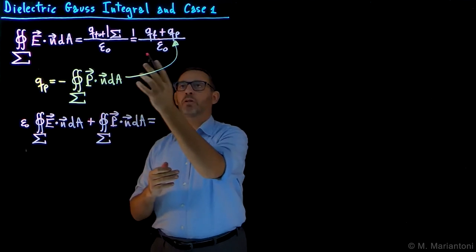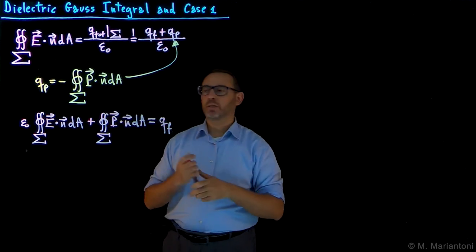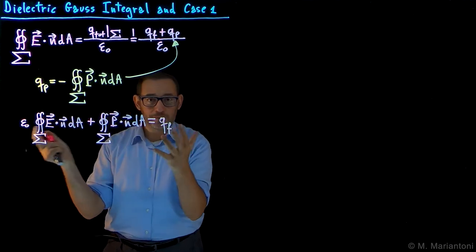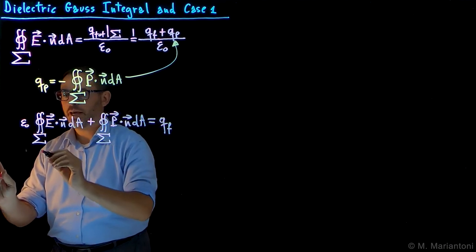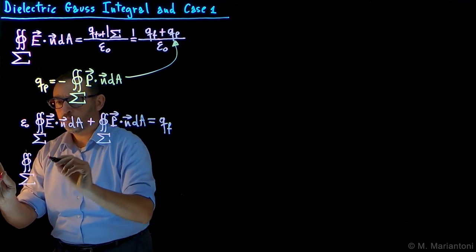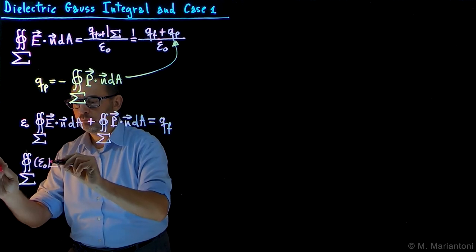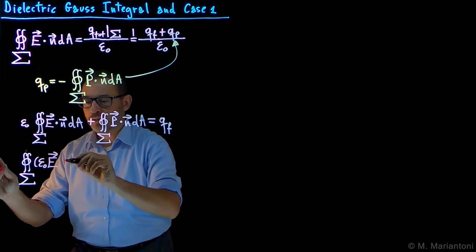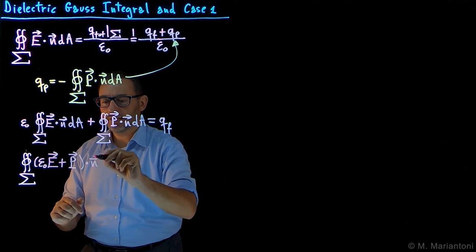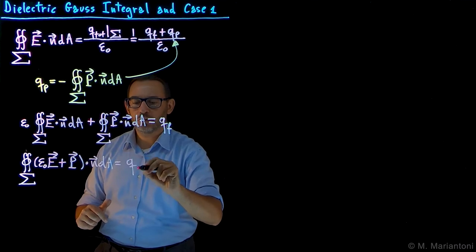This has to equal Qf — the total free charge present on the conducting materials. On the left-hand side we now have two fluxes over the same surface Σ, so we can merge them together and rewrite the expression as the flux through Σ of a new vector: ε₀E + P. The flux of this new vector dotted with n dA gives us the total free charge Qf on the conductors.